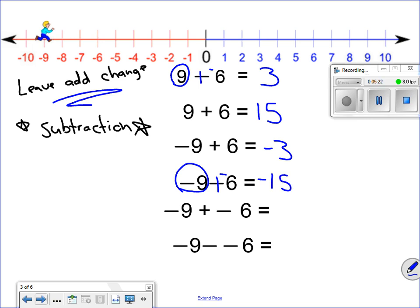Look down here. Since I'm adding, I don't have to do leave, add, change. Negative 9 plus a negative 6 gives me a negative 15.